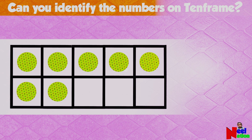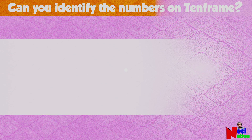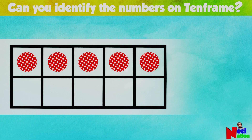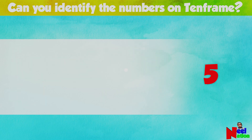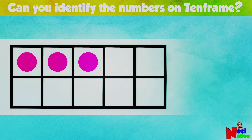Can you identify the number on the 10 frame? Seven — perfect! Can you identify the number on the 10 frame? Five — brilliant! The 10 frame shows the number three — perfect!